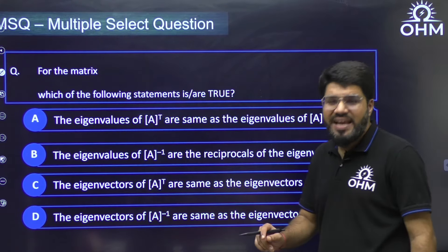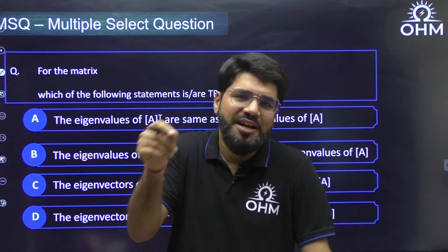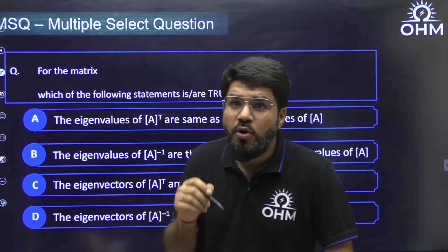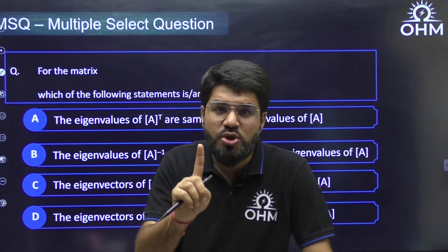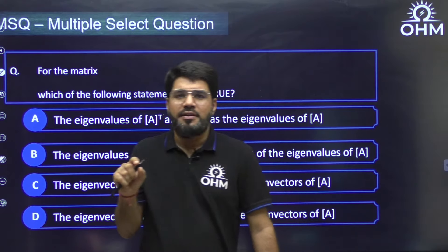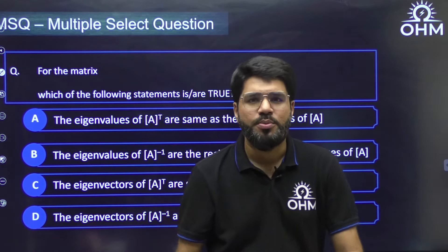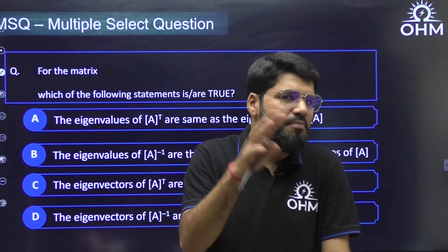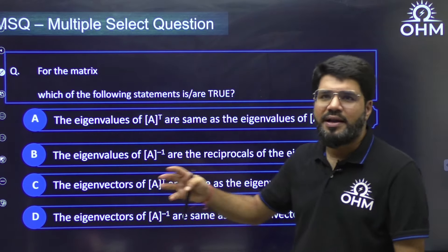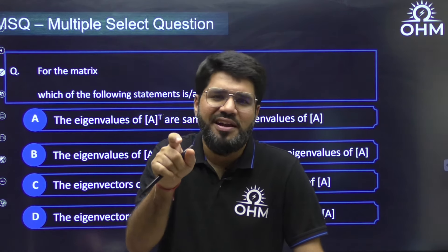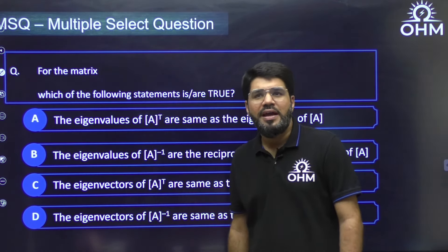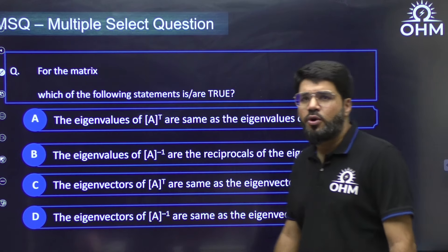The third category is MSQ — multiple select question. As the name says, multiple choices can be correct, meaning one or more options can be correct. In fact, one option may also be the only correct answer in an MSQ. If a question is labeled MSQ but only one option is correct, you might doubt yourself — so be very careful to check all choices thoroughly in MSQ questions.